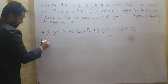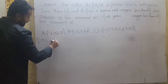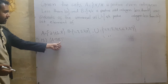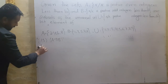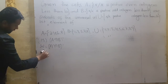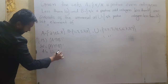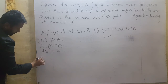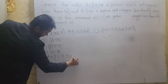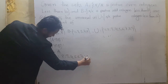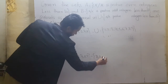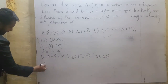Question number 15: (A complement intersection B) whole complement. पहले A complement solve करेंगे, then intersection करेंगे B के साथ, then solve करेंगे. A complement equals universal set minus given set A. Universal set = {1, 2, 3, 4, 5, 6, 7, 8, 9} minus set A = {2, 4, 6, 8}.